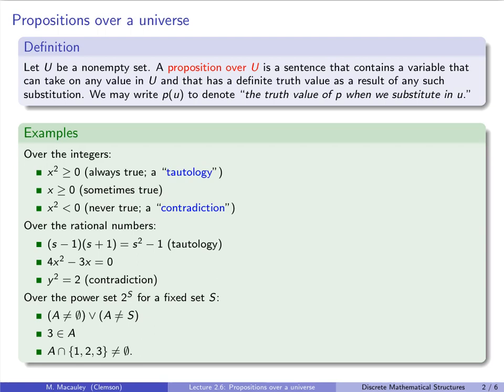Let me conclude with a non-example. Consider an expression like A ∩ {1, 2, 3}. We can certainly compute this for any subset A, but it doesn't make sense to say that this is either true or false — it's just a set, it doesn't have a true or false value.